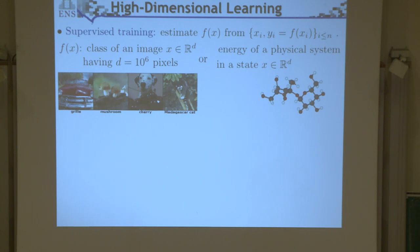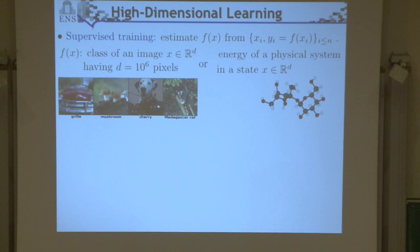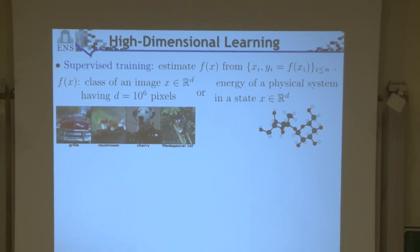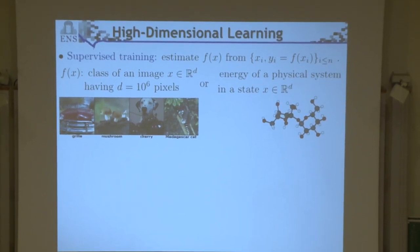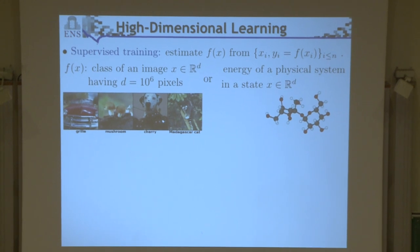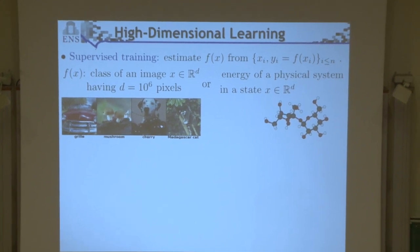In physics, if you want to learn physics, given the state of a system — for example a molecule, the position of the atoms, the number of charge — you'd like to compute the energy. If you can compute the energy by doing regression from a database, then you have access to the forces through the derivative. So basically, you can learn physics from data.